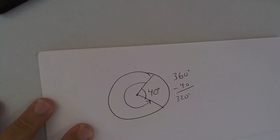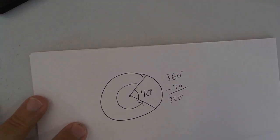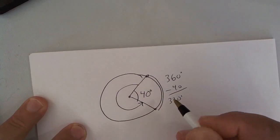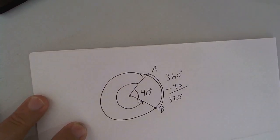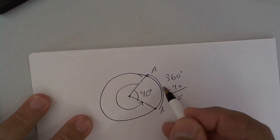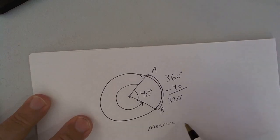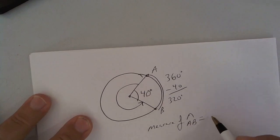Now, here's the deal. If they want to know the measure of arc AB, the measure of arc AB would be the same as the angle. So the measure of arc AB would be 40.